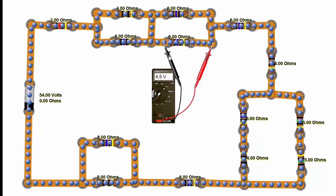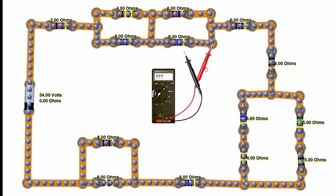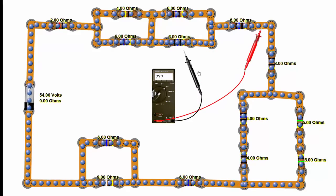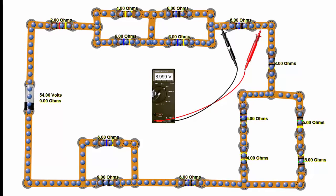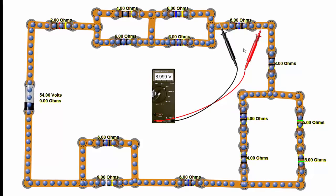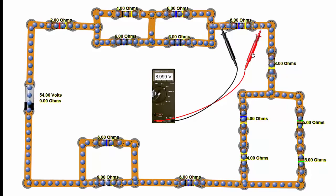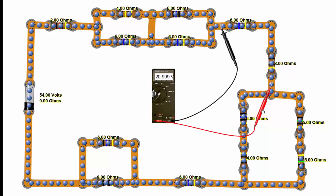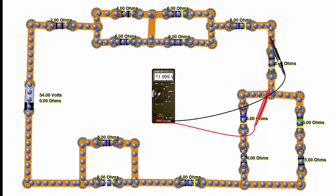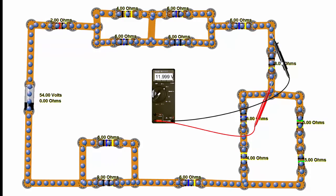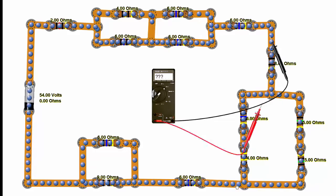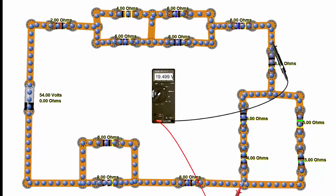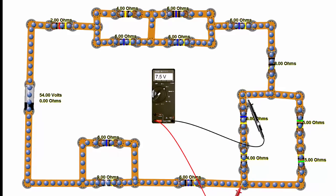We come across the 6-ohm resistor, and we have effectively 9 volts, 8.999. The simulator has some problems with rounding sometimes. Here we have 11.999, or 12 volts across this 8-ohm resistor, and down here we have 7.5 and 7.5 everywhere along here.